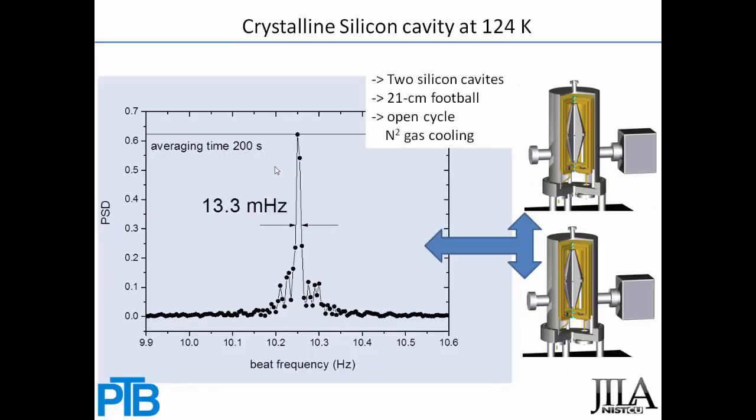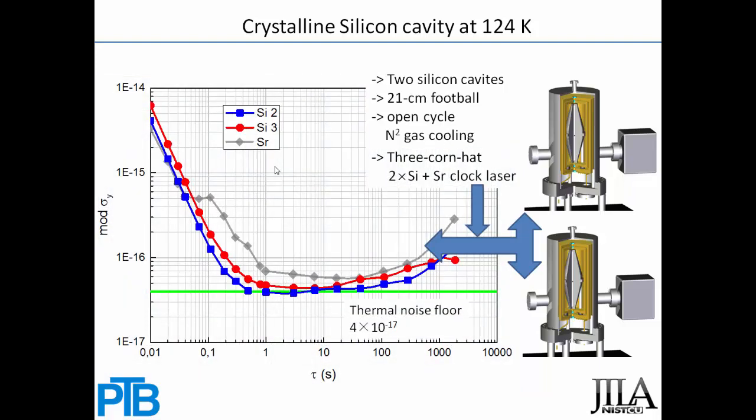In a nice collaboration with PTB, we built two silicon cavities with the same design. Each is 21 centimeters long with a total shape, and the cavity is cooled down to 124 Kelvin by open-cycle liquid nitrogen. By beating the two cavities directly, we get a laser linewidth of about 13 millihertz, so each is less than 10 millihertz — exciting for everyone working on clocks. Using a third stable laser at 698 nm for a three-corner comparison, we confirmed each laser has 10⁻¹⁷ stability, already limited by the thermal noise floor.